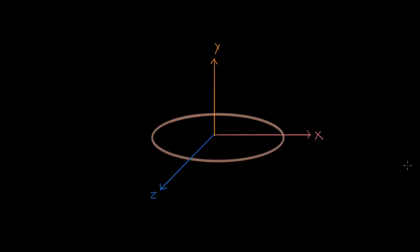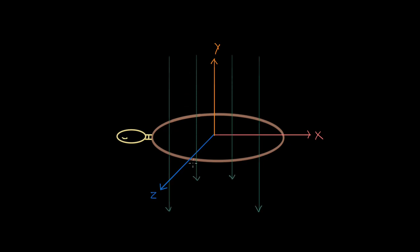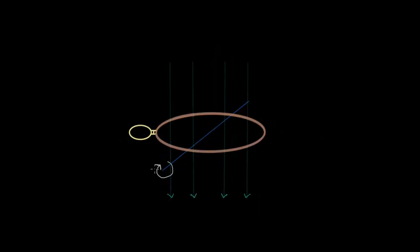Now let's look at the last case: changing the angle. We have a coil with three axes of rotation — X, Y, and Z — with a lamp attached, and magnetic field lines pointing vertically downward. First, let's rotate the coil about the Z axis and visualize what happens by viewing the coil from the side.